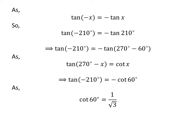We know the value of cotangent of 60 degrees is equal to 1 upon square root of 3. So we get the value of tangent of minus 210 degrees is equal to minus 1 upon square root of 3.